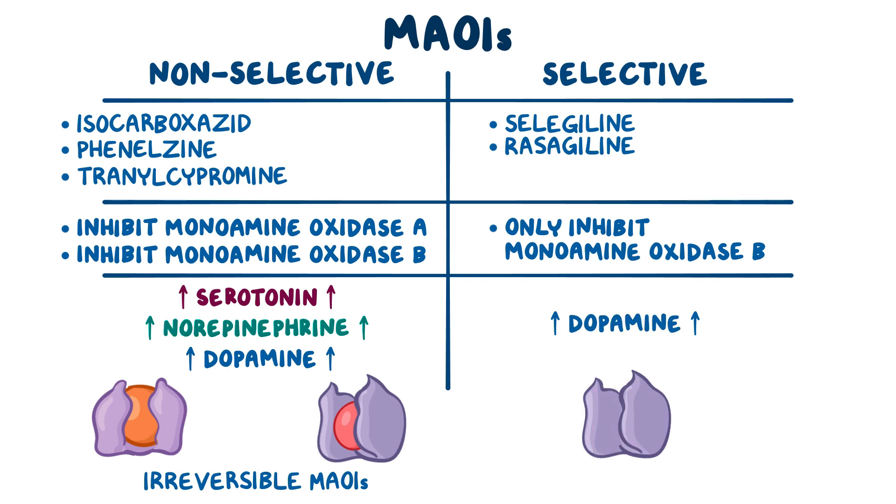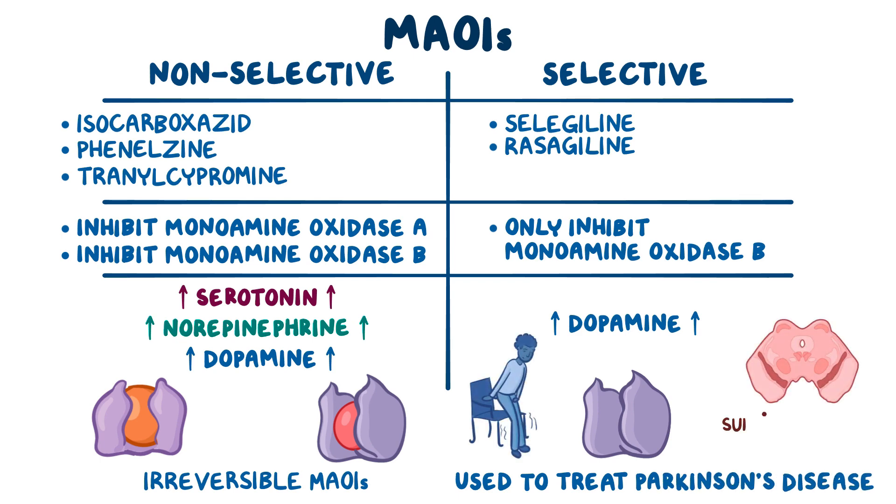Although they can be used as antidepressants, they are more commonly used to treat Parkinson's disease, a neurodegenerative disorder that affects the dopaminergic neurons in the substantia nigra region of the brain.